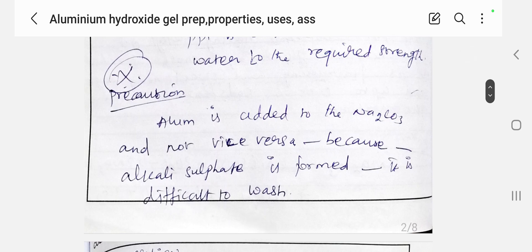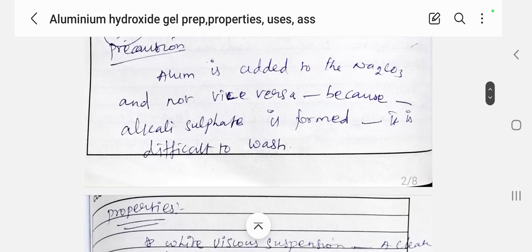Alum is added to the sodium carbonate — not vice versa. Why? Because when alum reacts with sodium carbonate, it produces alkali sulphate, which is difficult to wash. Therefore, first alum is added to the sodium carbonate; this must be considered while doing the formulation.